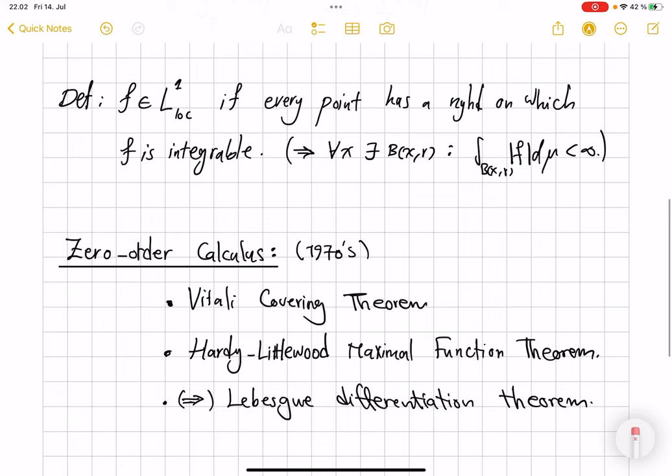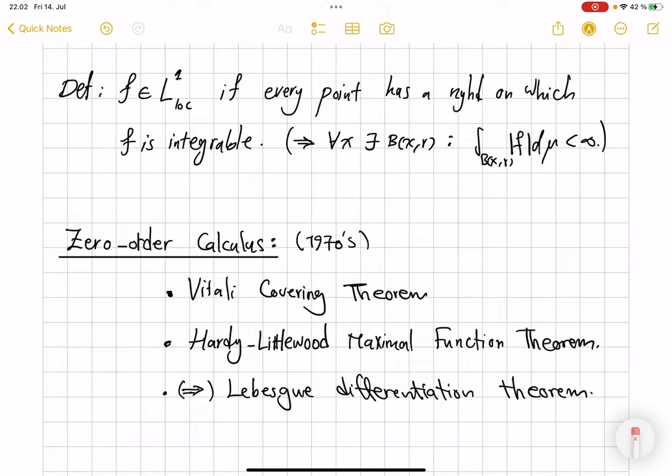And finally, by being locally integrable in L1 loc, or similarly being in Lp loc, means that every point in your space has a neighborhood on which f is integrable. This is a definition I'm following from Heynonen's book. In particular, this would mean that for every x there is some ball where the integral is finite.